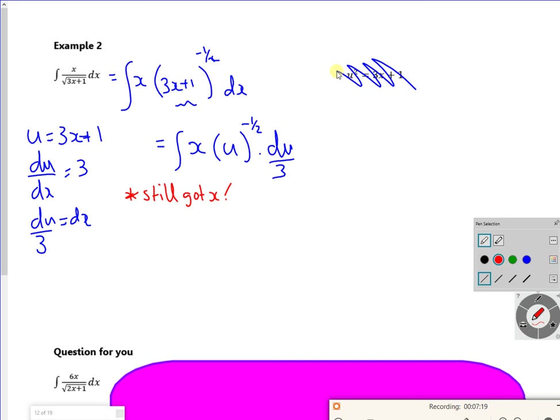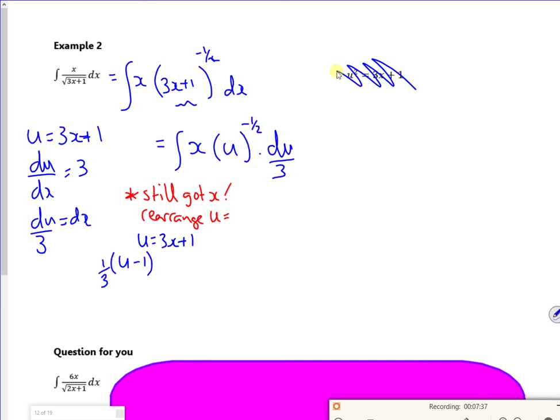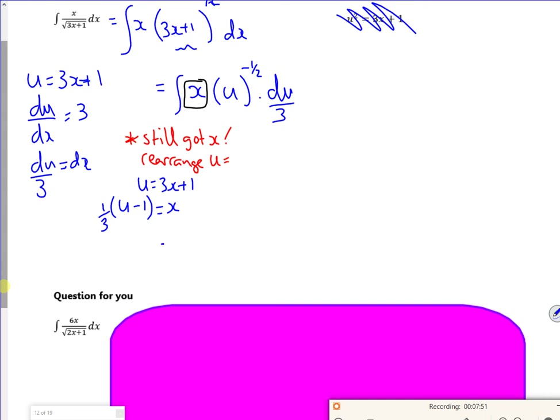So this is like a little bit extra now. So I've still got x. Even though I've cancelled down, I've still got the x. So what I need to do is rearrange u. So I've got u is 3x plus 1. So if I take the 1, and then divide by third, or times by third, that's what I'm going to replace this x for u. So the x didn't cancel like it has the many others. So I have to cancel it out now.